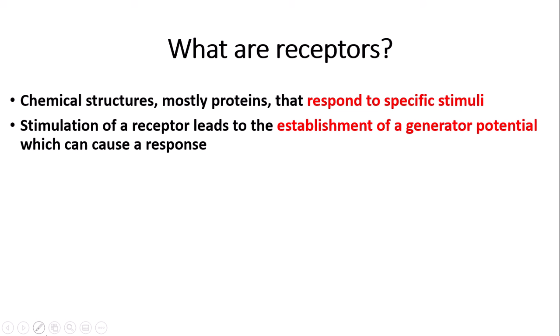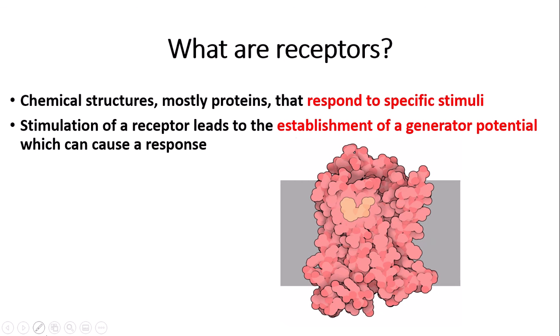A potential is basically an electrical difference between two sides of a membrane in the nervous system. Don't worry if you are a bit confused about what generator potentials are, as these will be covered in much more detail when I do my video about nerve impulses. So here is an example of a receptor — it is a protein complex within a cell membrane.